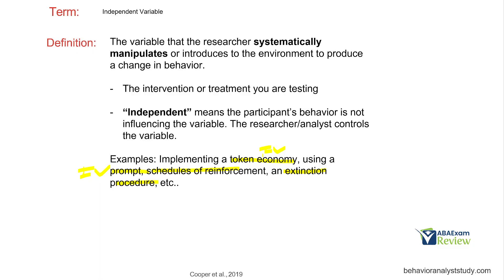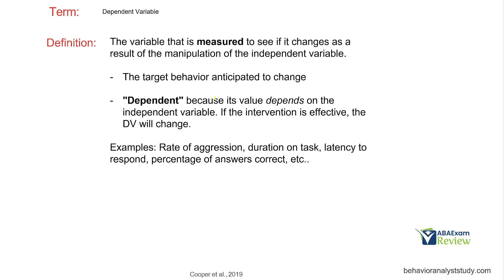Typically the intervention or treatment you're testing — we call it independent because the participant's behavior is not influencing the variable. It is independent of anything the participant is doing. You are in full control of this particular variable, and you're trying to see and manipulate how this variable is going to change that behavior. So what do we call that behavior? We call it the dependent variable — the variable that is measured to see if it changes as a result of the manipulation of the independent variable.